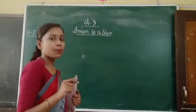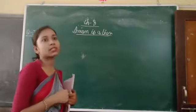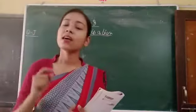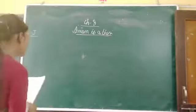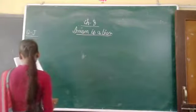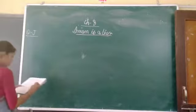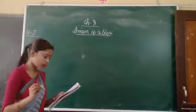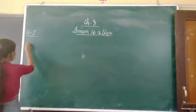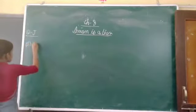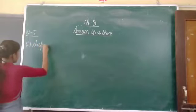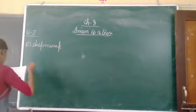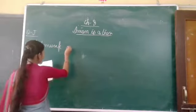So in this video we have to talk about the three animals and tell their special features using describing words. Let's start. The first one is chipmunk. I will write the name of the animal. So the first one is chipmunk.